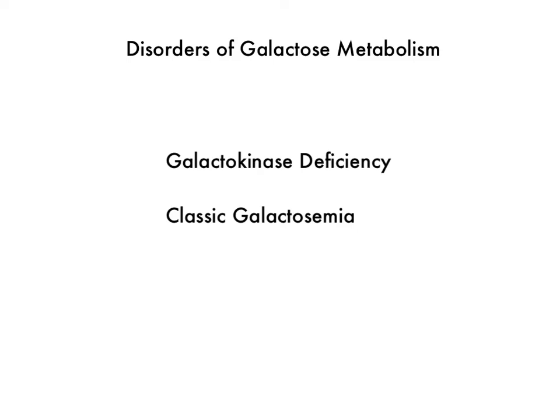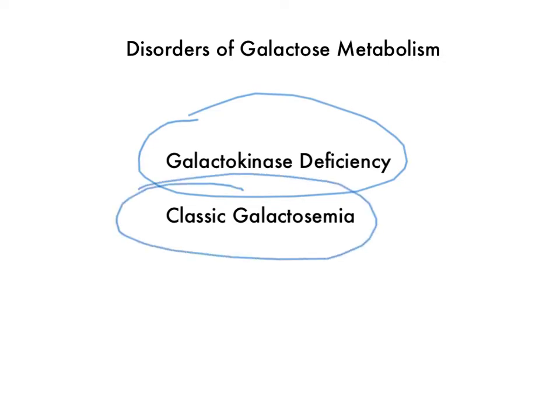For this section, we're going to be talking about disorders of galactose metabolism. For Step 1, there are two disorders that we have to know: the first is galactokinase deficiency, and the second is classic galactosemia. These might seem similar, but they're actually very different diseases, and you should be able to pick them out pretty quickly on Step 1. I'll go over the biochemical processes so we can really understand what's going on.